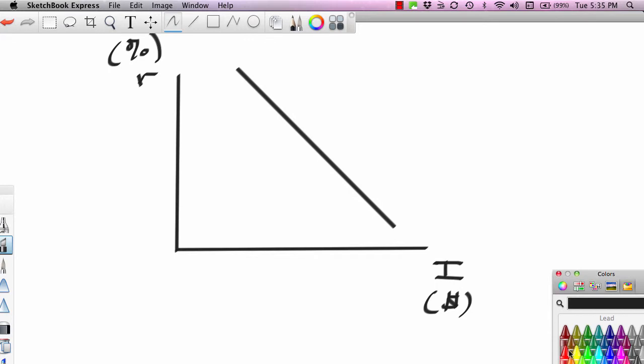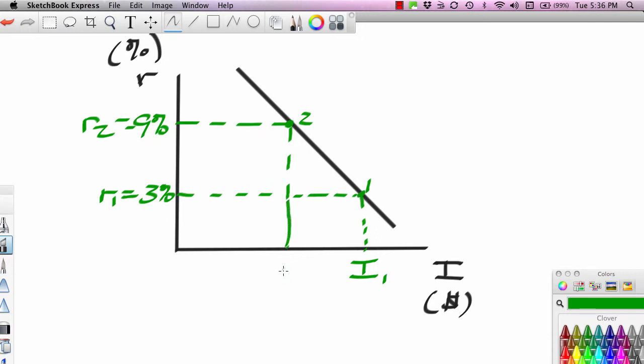Let's look at this. If the interest rate is relatively low, say R1 equals 3%, the investment rate will be relatively high, I1. If the interest rate is relatively high, say 9%, then the investment is lower, I2. Higher interest rates lead to lower investment. This is the law of demand, now applied to investment decision making. We can call this the demand for investment curve.